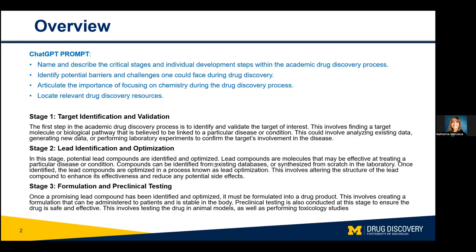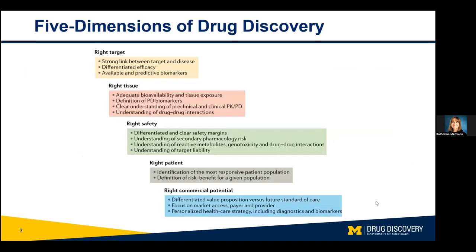I'm going to talk about that through the next several slides, because that's obviously one of the most critical things we can do in an academic environment, and it's one of the things not done extensively in the private sector — really identifying and validating new targets for drug discovery projects. Then, if it's a small molecule drug discovery project, there's going to be some process of identifying a chemical class to work on, and that will require some degree of optimization, and then figuring out how to deliver the optimized compound to a patient.